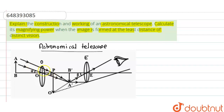When light falls on the objective lens, the light rays follow a path such that the ray passing through the optical pole passes without deviation, and the other ray deviates so that both rays meet at a point. Here the image of the object AB is formed as A'B'. This image A'B' formed by the objective lens serves as the object for the eyepiece lens.